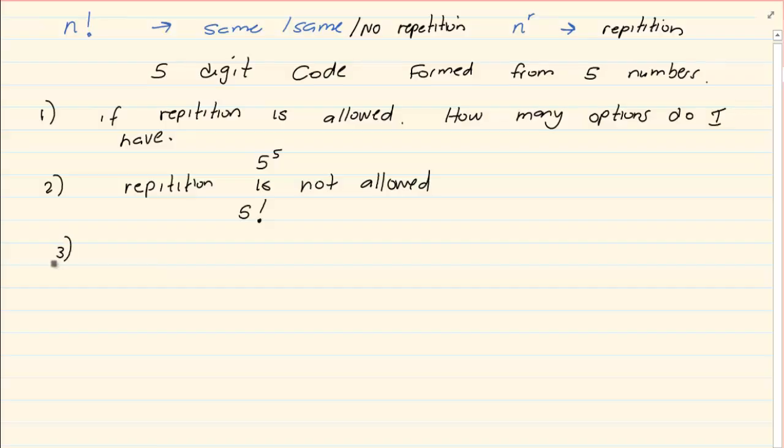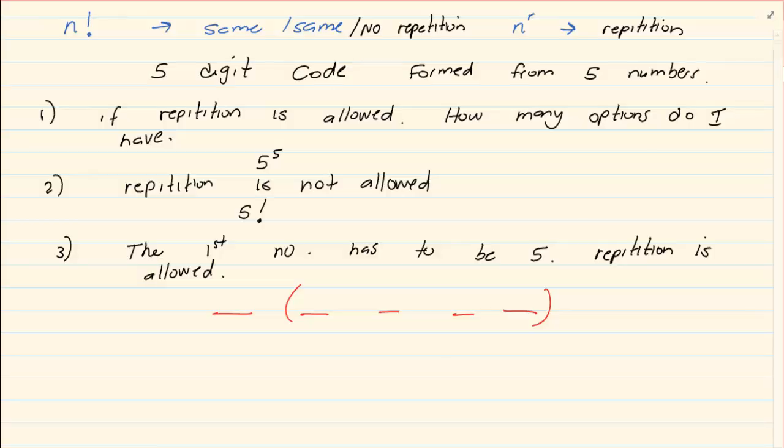But let's make it a bit more challenging. What if I said the first number has to be five. Repetition is allowed. Now look at what they are doing. We know we have five choices. Now they are telling you that the first number has to be five. So how many options do you have there? You only have one option. Can you see that? Because the only option you have is five. So it would be one times five to the power of four.